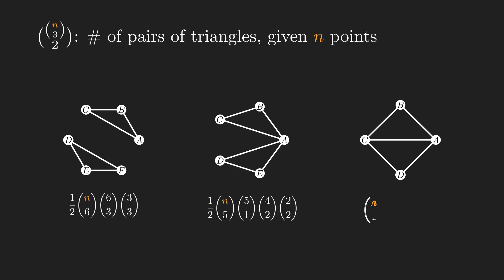The last case requires 4 points out of n, then 2 points should be selected to be the shared ones. We need 1 point out of the remaining 2 for the first triangle and 1 point out of 1 for the second triangle. For the same reason as before, we divide by 2. Same as before, we sum over all cases.